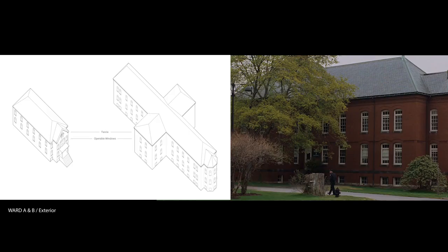Starting with the exterior of Ward A and B, they are small Gothic-style buildings that are simultaneously modest yet ornamented, creating a welcoming and domestic character. Aesthetically, the ornamentation along the roof's fascia dignifies the building and makes it more personable. The large operable windows at eye level provide a high level of visual autonomy. Both of these factors create a supportive environment for its inhabitants.